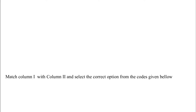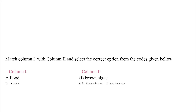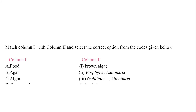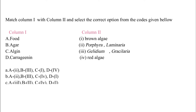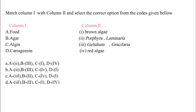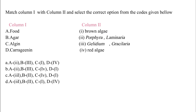Match Column I with Column II and select the correct option from the codes given below. Column I: A. Food, B. Agar, C. Algin, D. Carrageen. Column II: I. Brown algae, II. Porphyra and Laminaria, III. Gelidium and Gracilaria, IV. Red Algae.